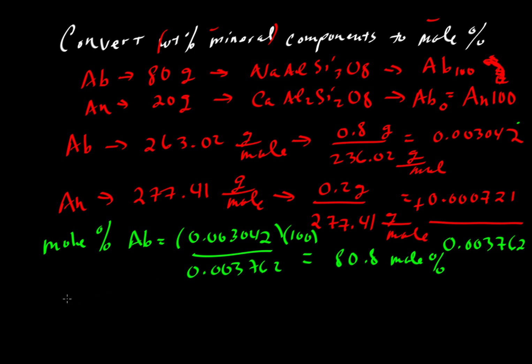And we could play the same game with anorthite. So anorthite would be the case where we take this value, 0.000721, multiply that by 100 if we want a percent, and divide the whole thing by 0.003762. And that will give us 19.2 mole percent.